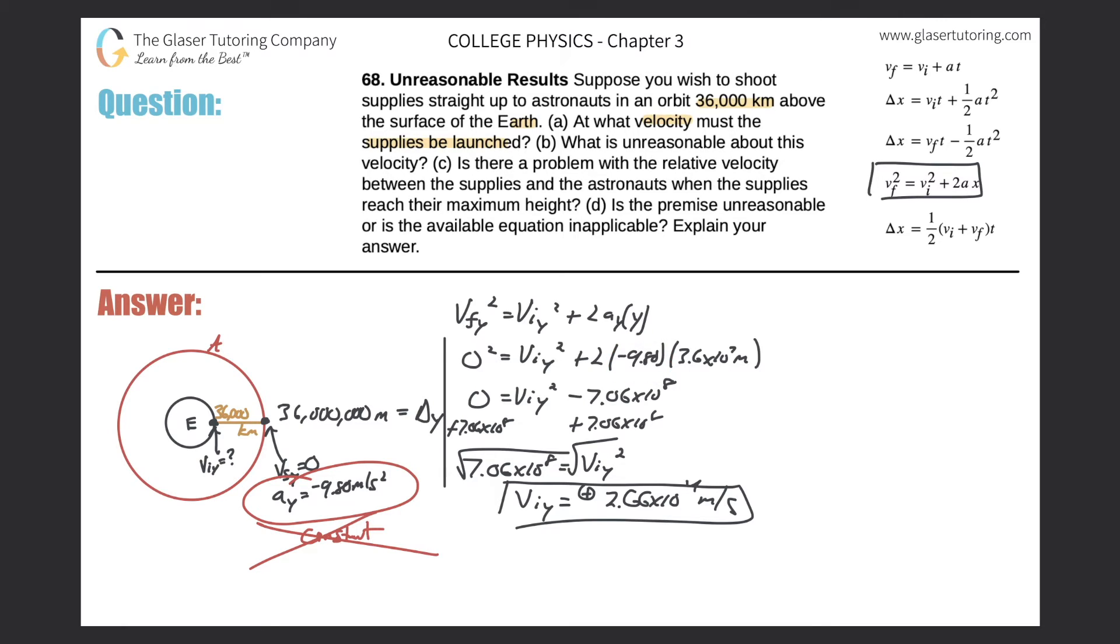Okay, then it says letter c: is there a problem with the relative velocity between the supplies and the astronauts when the supplies are reaching their maximum height? So think about this. As the supplies are moving towards the orbit and the astronauts are now moving around their orbit at a certain speed, they're not stationary. They're going to be moving with some velocity. The issue now becomes, if the supplies now reach a point at which they're not moving anymore but the astronauts are still traveling.